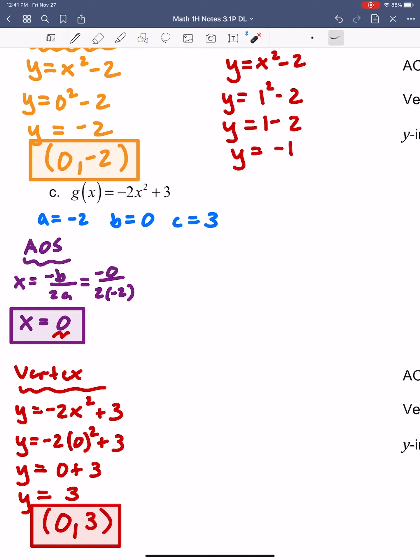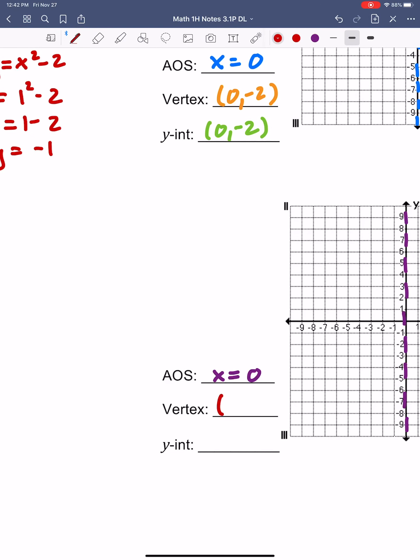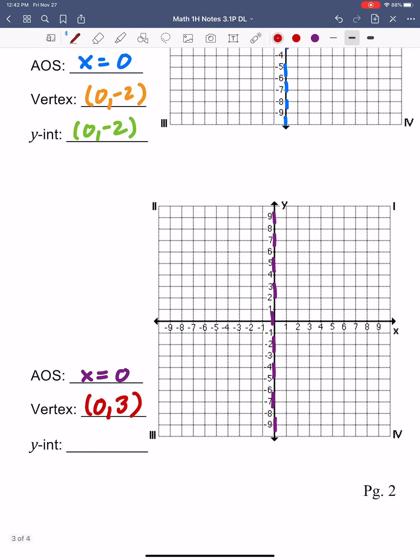So then my vertex is going to be (0, 3). One more time: I took my x value from the previous part and plugged it into my original equation. I found the y-coordinate of the vertex, which turns out to be 3. So we have (0, 3) for the vertex, right there on my graph.